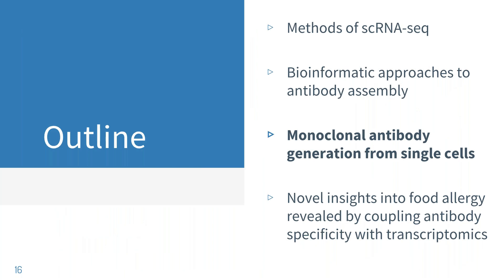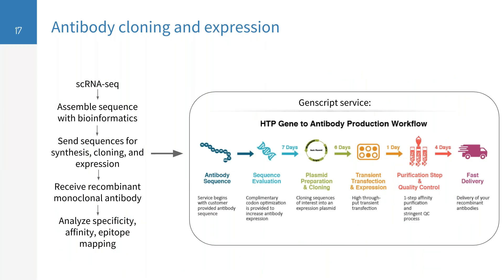I'd like to quickly go into how to generate monoclonal antibodies from our single cell sequencing assemblies. After doing single cell RNA-seq and bioinformatics to assemble the sequences, I used GenScript's HTP gene-to-antibody production workflow. I can generate sequences informatically and then send those amino acid or nucleotide sequences to GenScript. They synthesize the heavy and light chains, clone them, transiently transfect them into mammalian cells, express, purify, quality control them, and send the recombinant monoclonal antibodies back. This has increased the throughput of our research so I can focus on analyzing specificity, affinity, and epitopes.